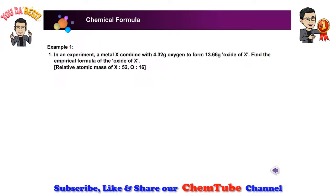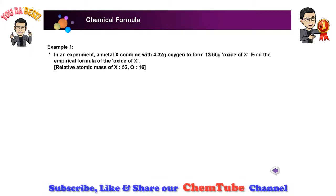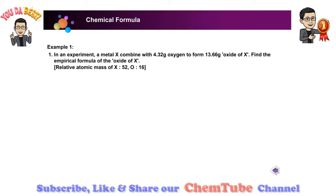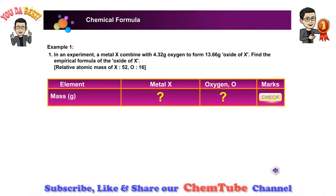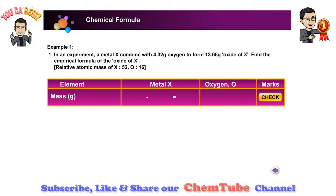In an experiment, a metal X combines with 4.32 grams of oxygen gas to form 13.66 grams of a metallic oxide of X. Find the empirical formula of the metallic oxide. Step 1: Find the mass or percentage of elements X and O in the compound. Type in your answer in the blank space provided and click the check button.